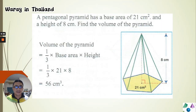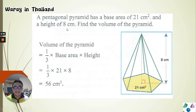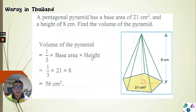Example two: A pentagonal pyramid has a base area of 21 square centimeters and a height of 8 centimeters. Find the volume. Here the base area and center height are already given. Using the formula: V = one-third × 21 × 8. Simplifying, 21 divided by 3 is 7, times 8 equals 56 cubic centimeters. The unit is cubic because area is power 2, plus one more dimension gives power 3.